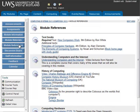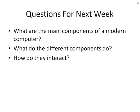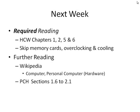In each set of notes, links to appropriate sections of the three books are listed. The questions for next week are: what are the main components of a modern computer, what are the different components doing, and how do they interact? We'll start looking more into the insides of the modern computer next week. The required reading is to be read in advance of the class — chapters in 'How Computers Work' are not terribly long. Read over chapters 1, 2, 5, and 6.